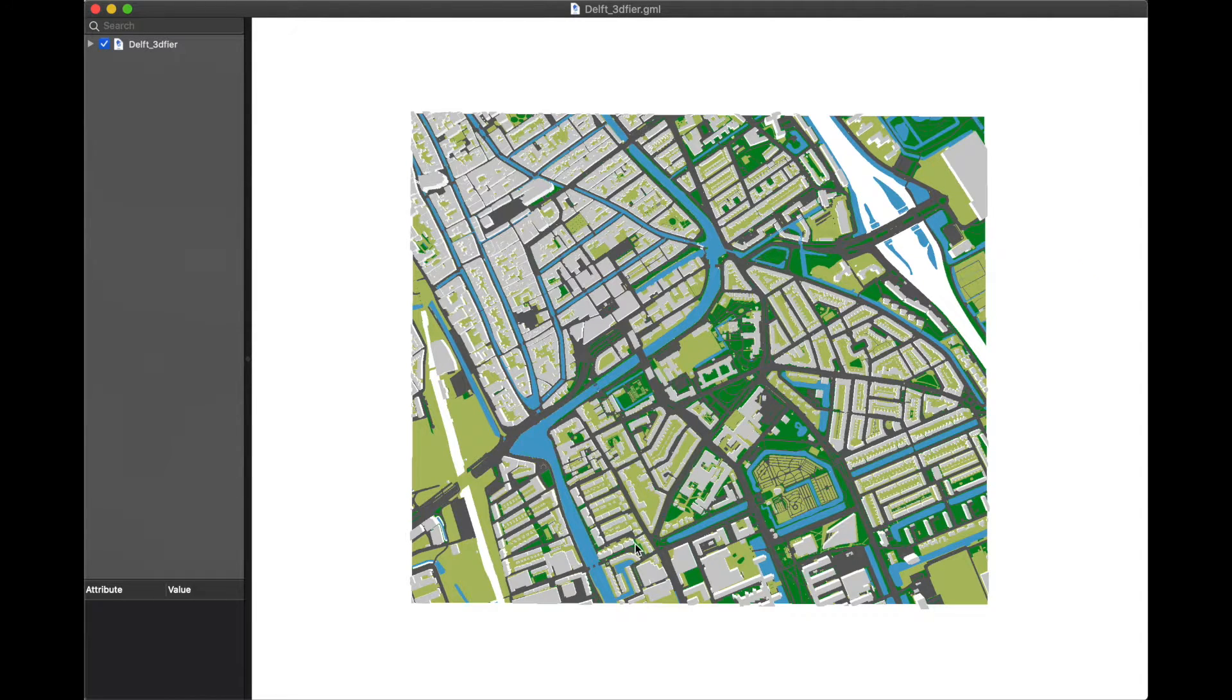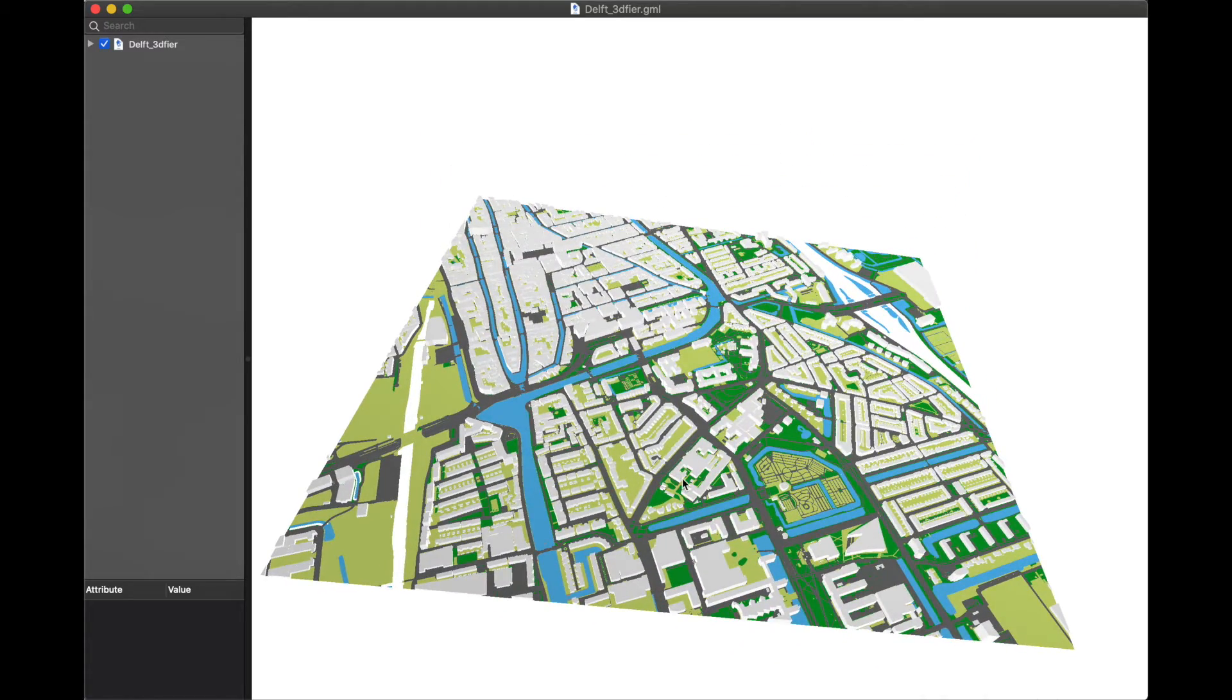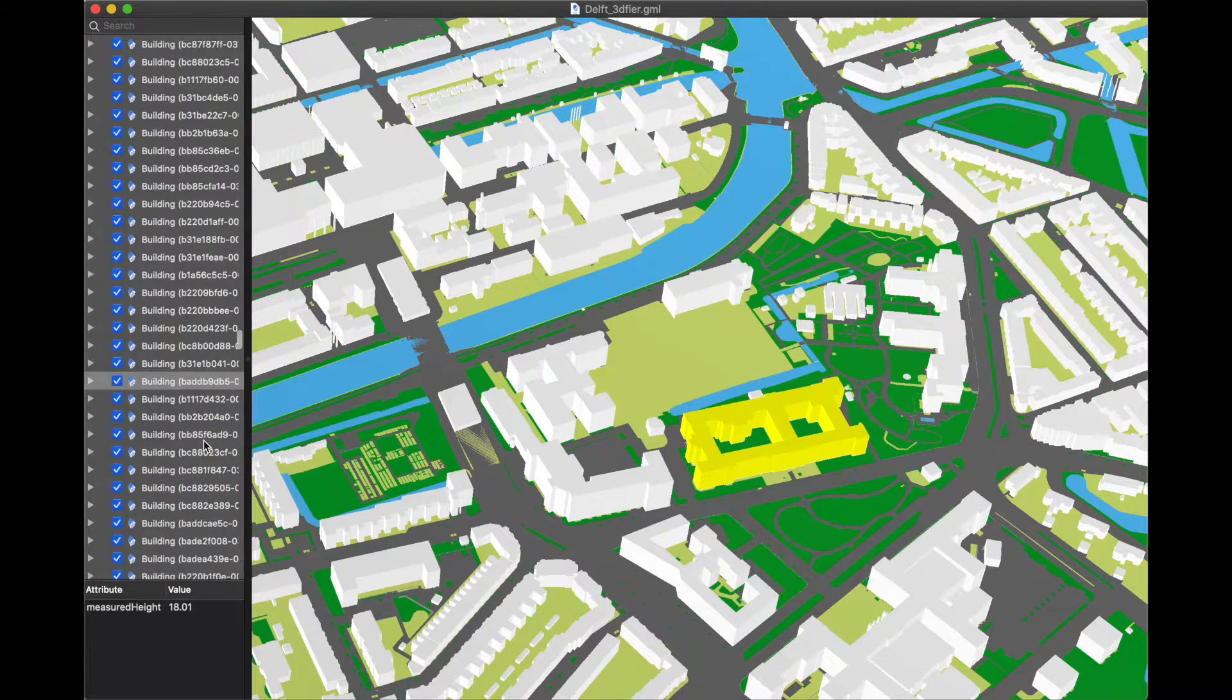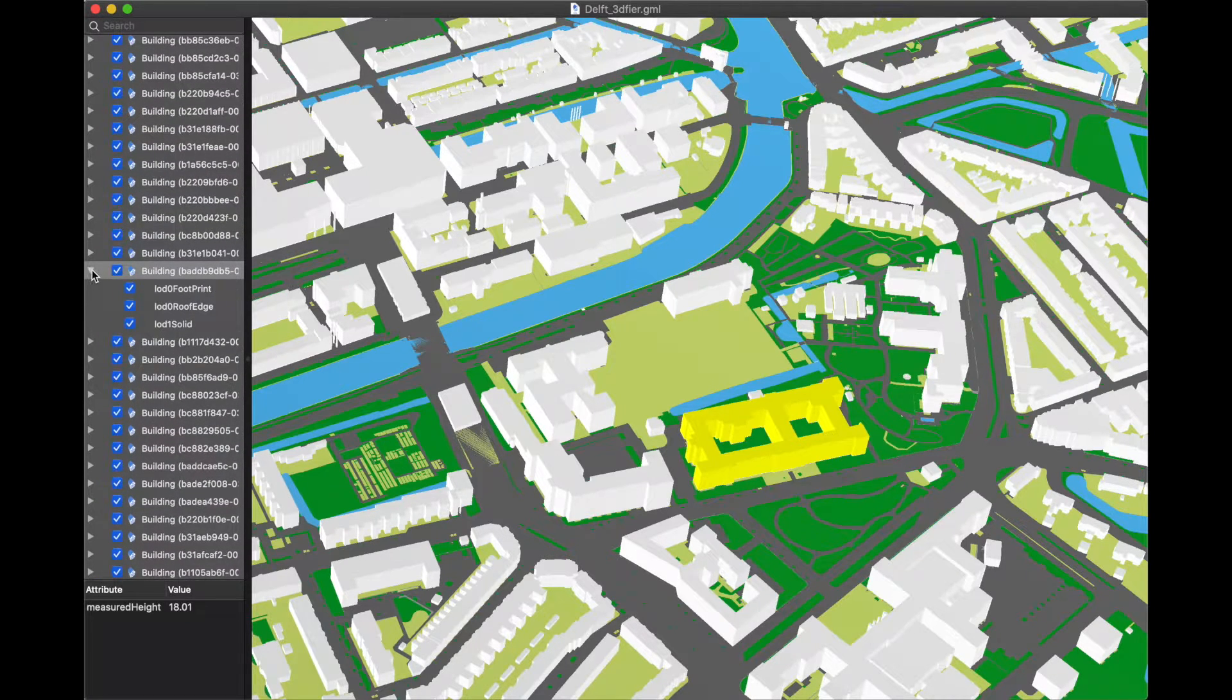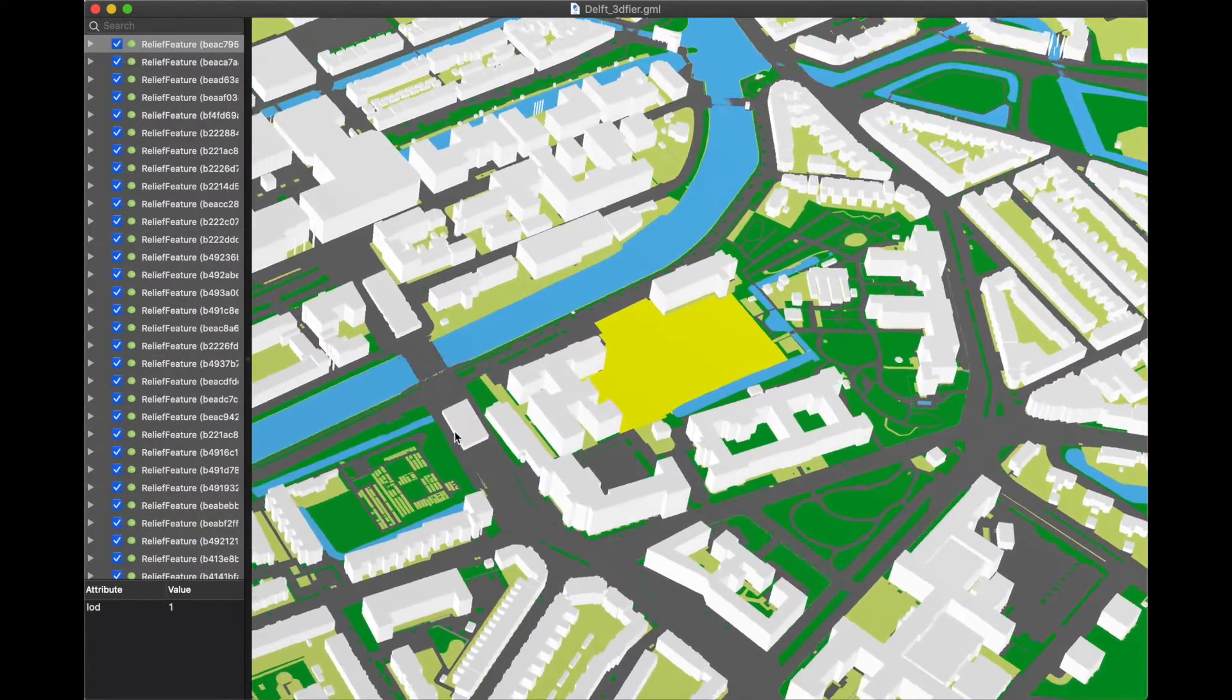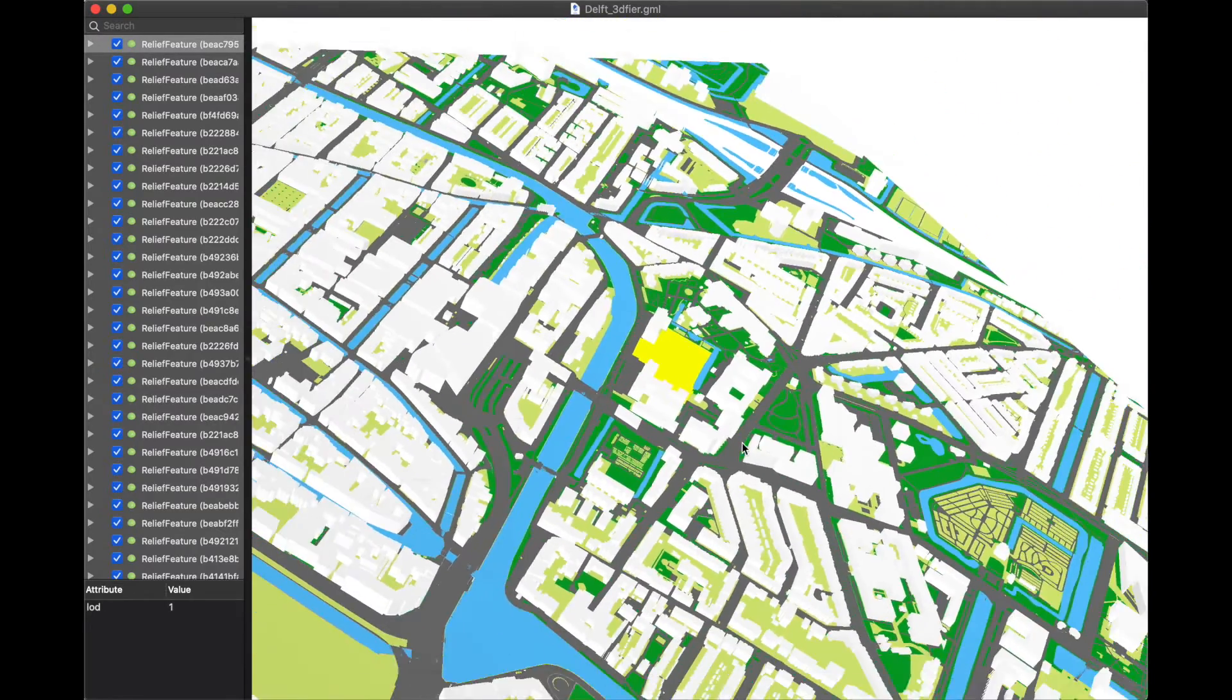3D city models are representations of large areas, usually composed of 2D surfaces that have semantic information attached to them. The focus is on modeling buildings, but other features present in an area are also covered, like terrain and water bodies, as well as more urban features such as roads and city furniture.